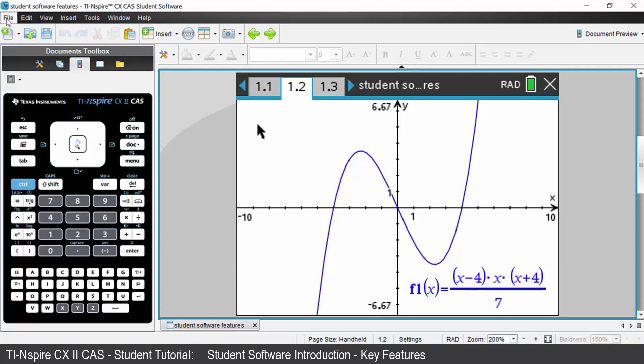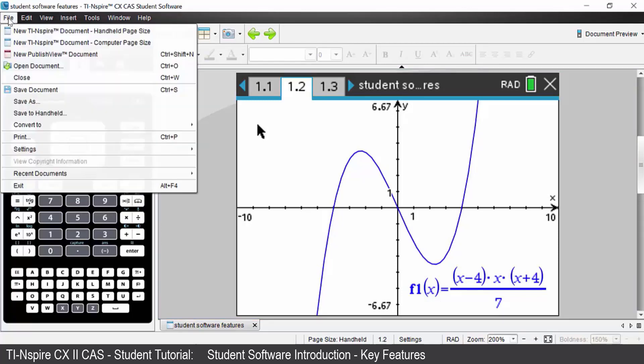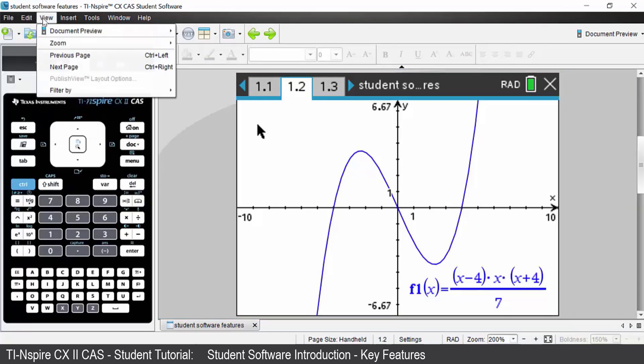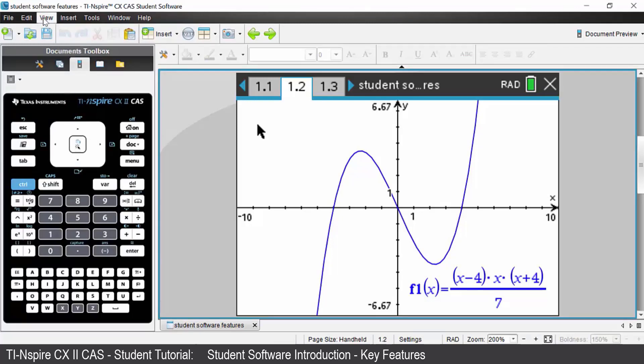The menu items across the top are the same as your traditional menu items with many other software. You've got file, edit, view, etc. Now many of the menu items under those words are the same as the icons underneath. So we'll have a look at the icons.